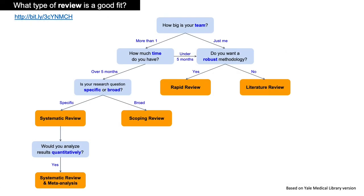Before embarking on a systematic review, check your readiness with a couple of tools. First is a flowchart: What type of review is a good fit? At the top, the first question is how big is your team. If you are the only member, decide if you will have a robust methodology — if yes, consider a rapid review; if no, a literature review is best. If your team is more than one, consider: how much time do you have? If over five months, decide if your research question is specific or broad. A broad question may lead to a scoping review.